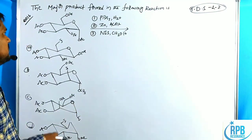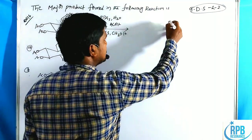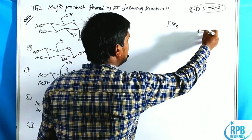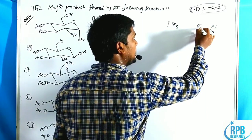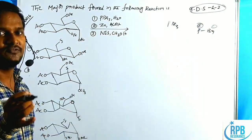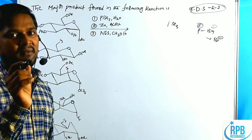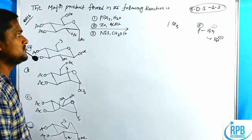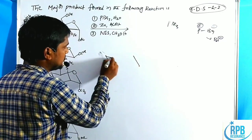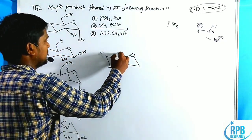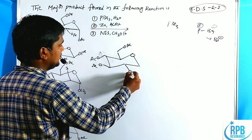Now let us go through our problem. They are giving an acylated carbohydrate moiety. The first reagent given is PBr3 — phosphorus tribromide. According to electronegativity, bromine is more electronegative than phosphorus, so phosphorus is the electrophile and bromine is the nucleophile. PBr3 gives Br minus, a bromide nucleophile. The reactant has OAC groups at multiple positions.